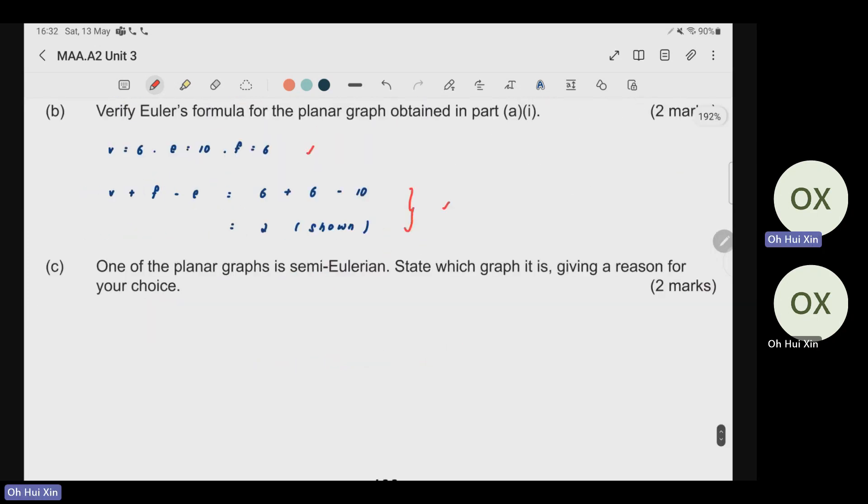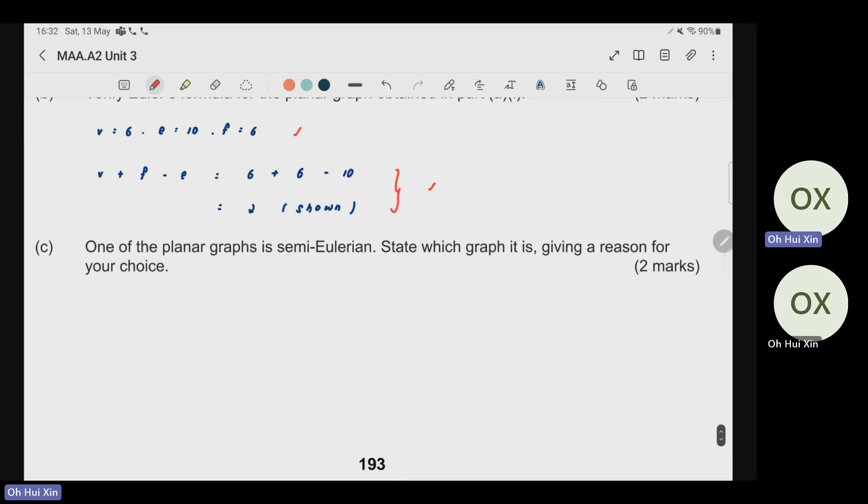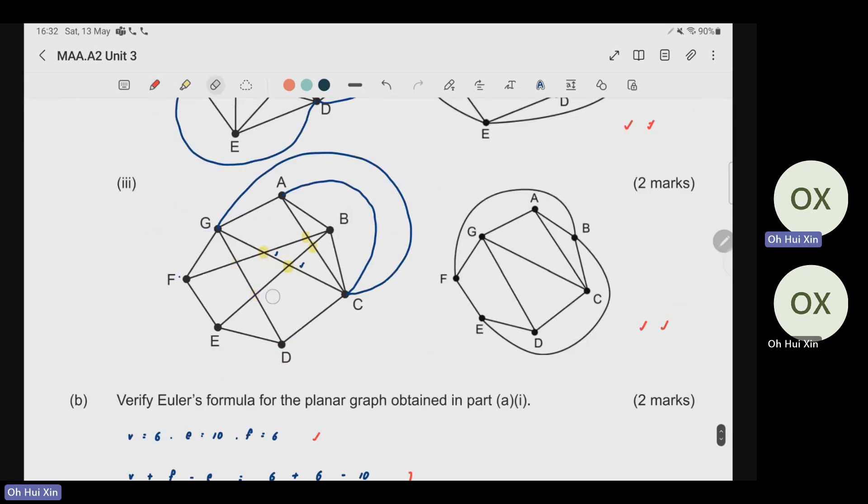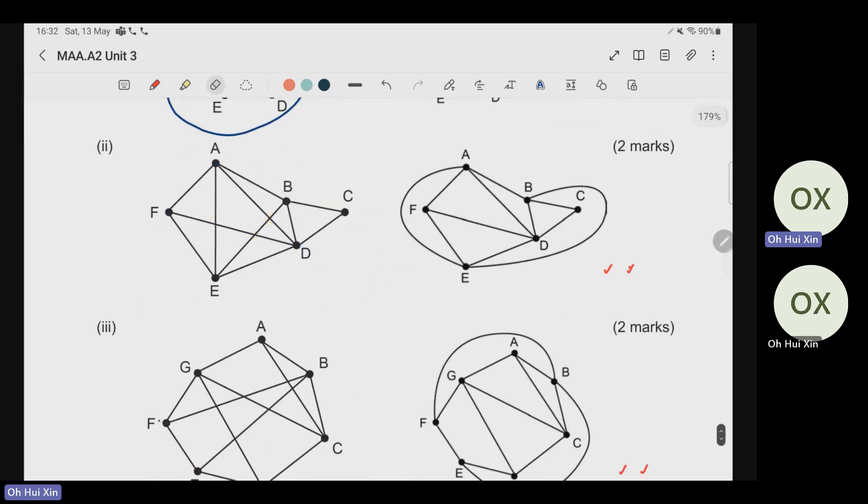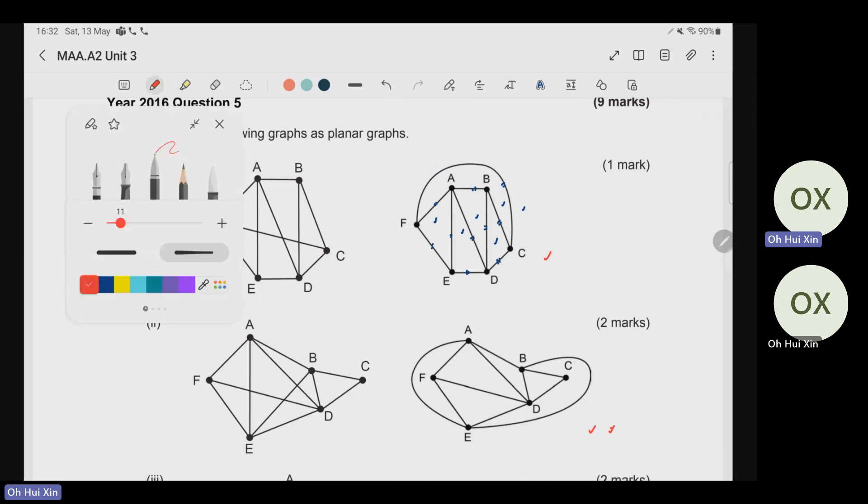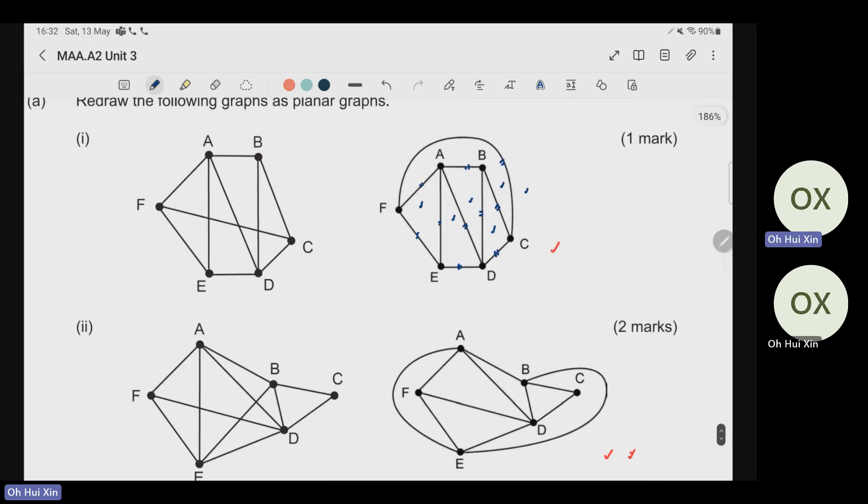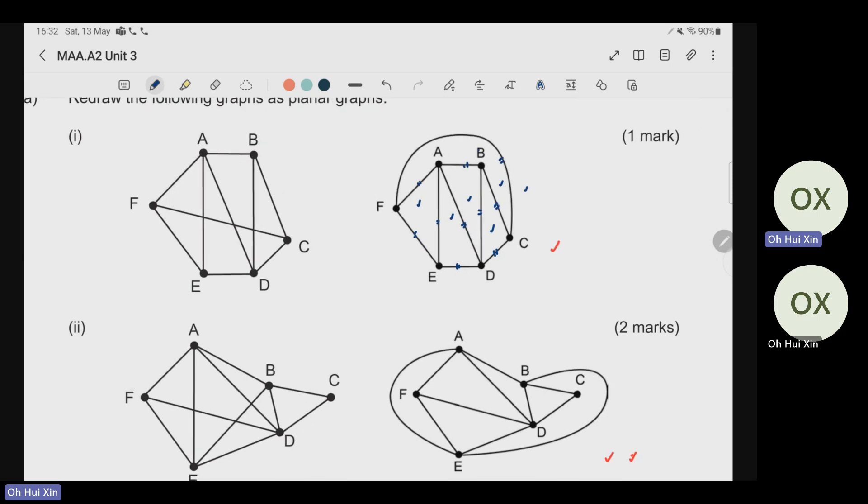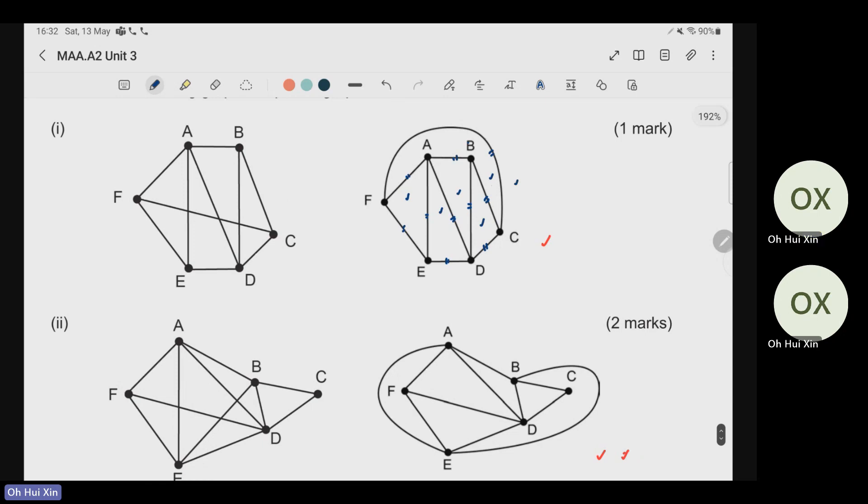After that, let's look at C. One of the planar graphs here is semi-Eulerian. State which graph it is and give a reason for your choice. For semi-Eulerian graph, we know that we need to check the degree for your vertices. The one having two odd vertices will be classified as semi-Eulerian. For this question, no matter you are looking at the one before you redrawn or after you redrawn, they're supposed to give you the same answer because your adjacency should be the same even when you redraw it as a planar graph. But I would say that looking at the original one is safer because just in case you draw anything wrong when you try to redraw the graph, the error will be just carried forward for the next question.